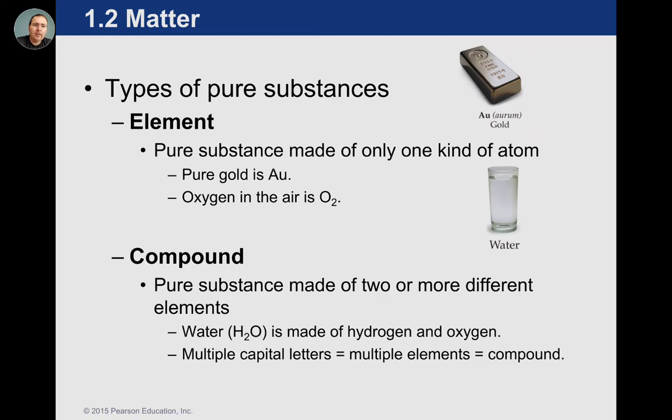When atoms are small, we have to worry about who and what they are. If you have just a singular element, that's something you can find on the periodic table and recognize by name. If it's a compound, it just means there's more than one capital letter in its chemical formula. If you have more than one capital letter in a chemical formula, that means it has more than one element. If they're chemically bound together, that's definitely a compound.